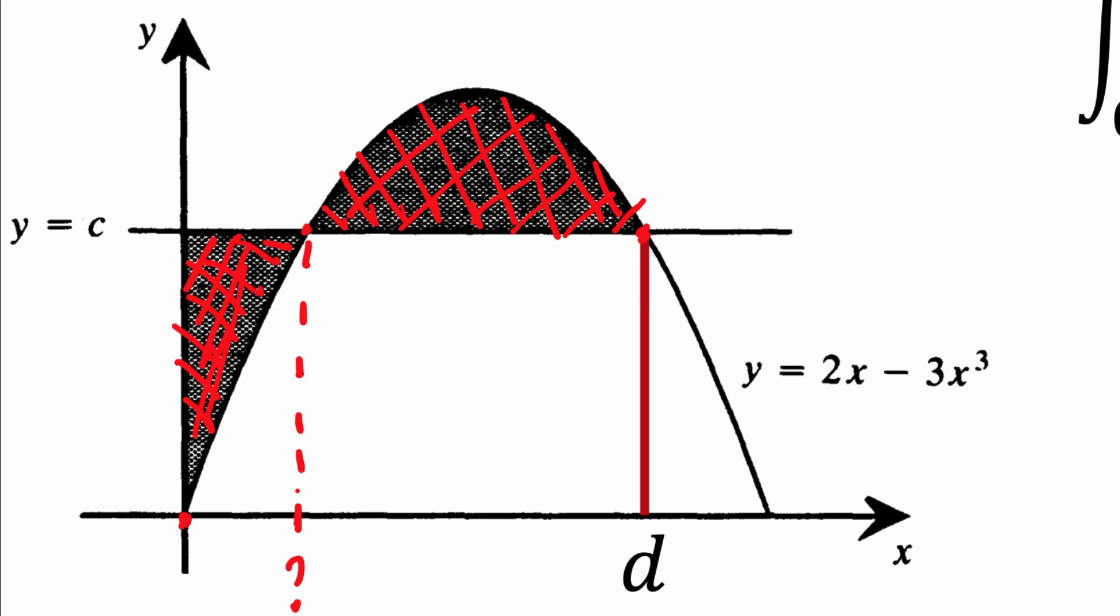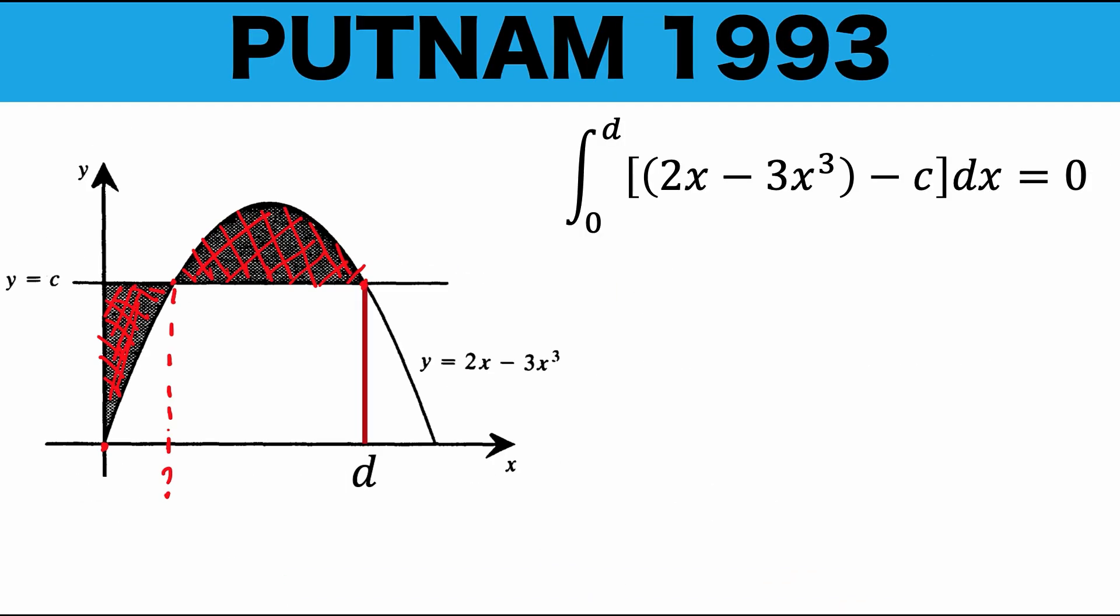In other words, if we write the function y equals 2x minus 3x cubed first and subtract the function y equals c, then the area that we will get here is, in this left part, we are going to get a negative area. And after this point, the area would be positive. Because here, the curve is above the line, whereas here, the line is above the curve. And since these two regions have the same area with opposite signs, then their combined area must be 0. That's why we equated this definite integral to 0.